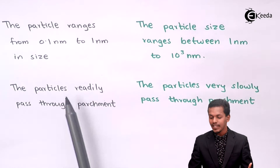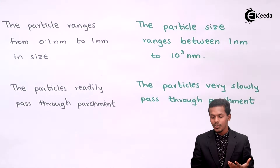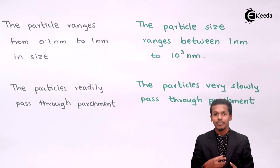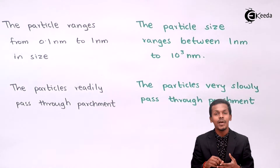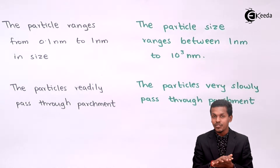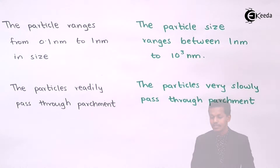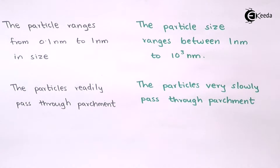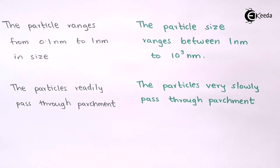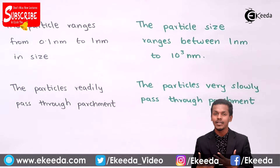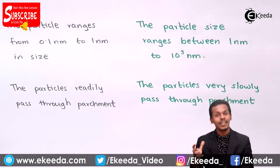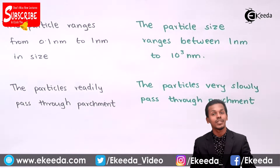The fourth point is that true solution particles readily pass through parchment. Because true solution particles are very small — 0.1 to 1 nanometer — they can easily pass through parchment and cannot be stopped by it. But for colloidal dispersion, the particle size is comparatively larger, so the particles pass through parchment very slowly or cannot pass easily. This makes them different from true solutions.